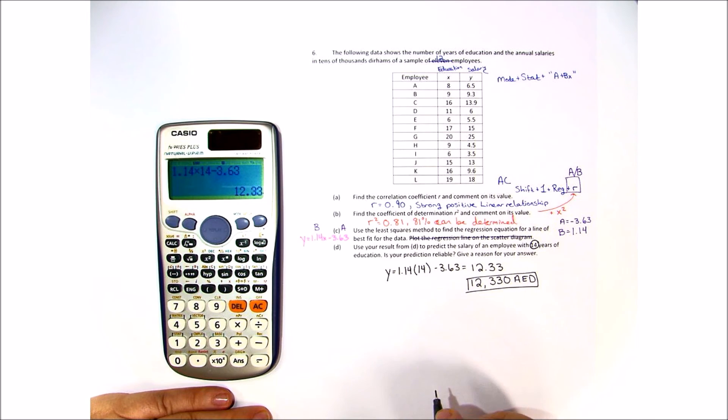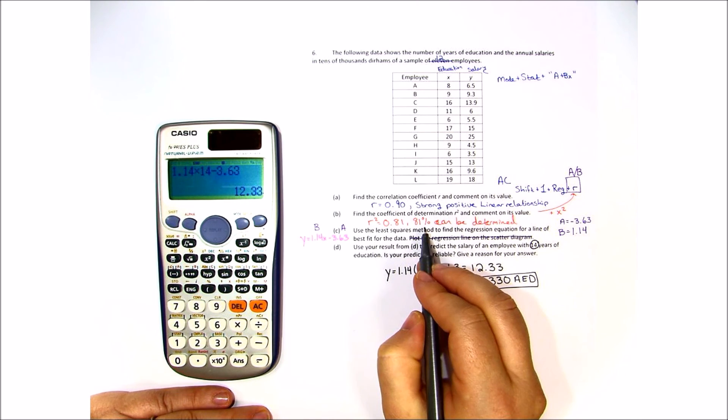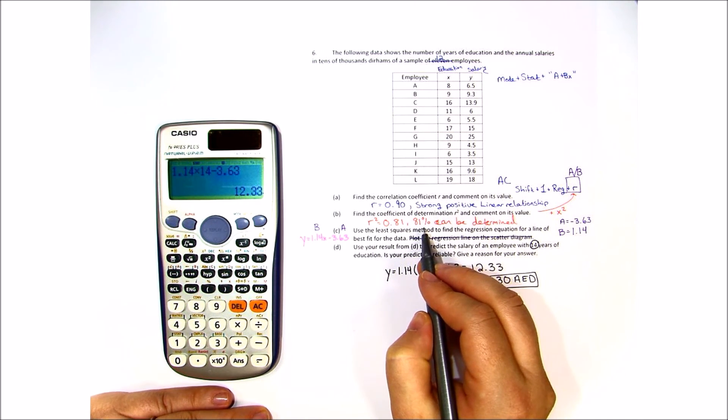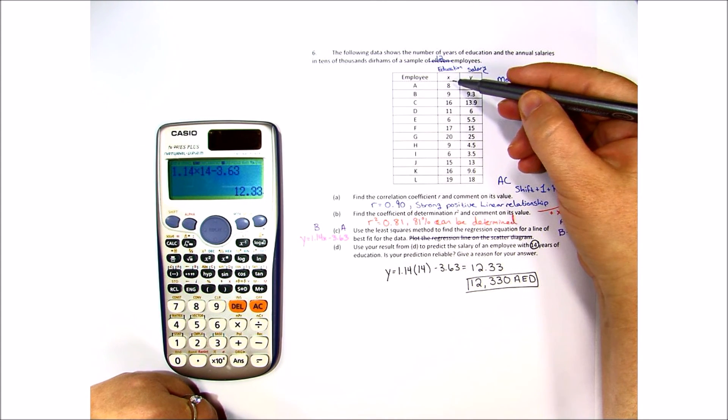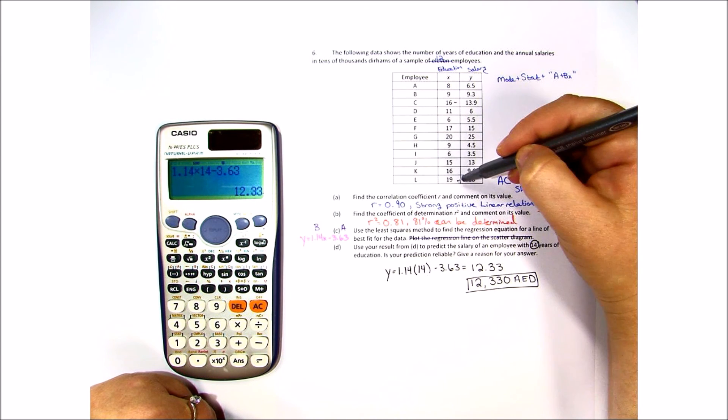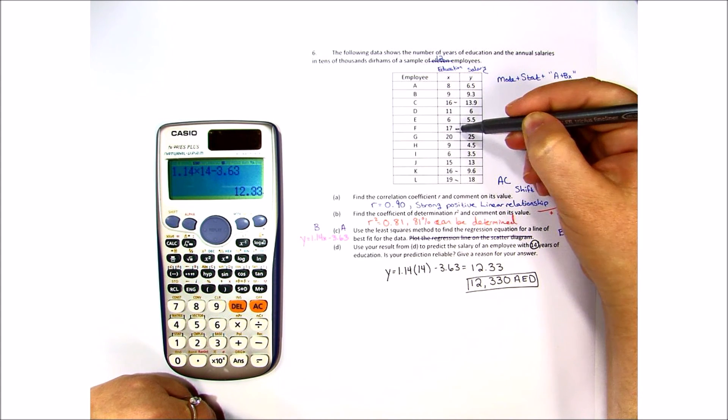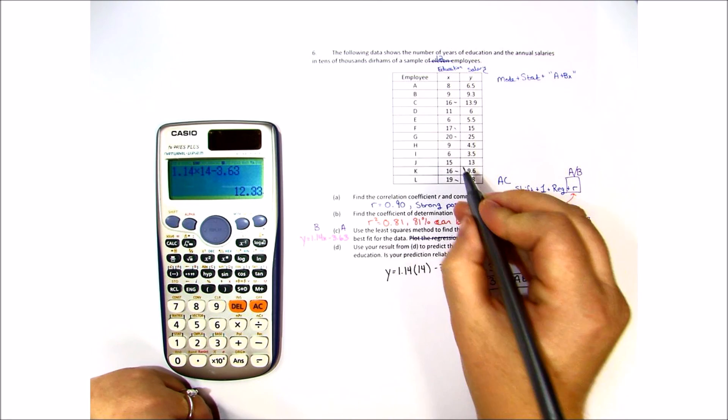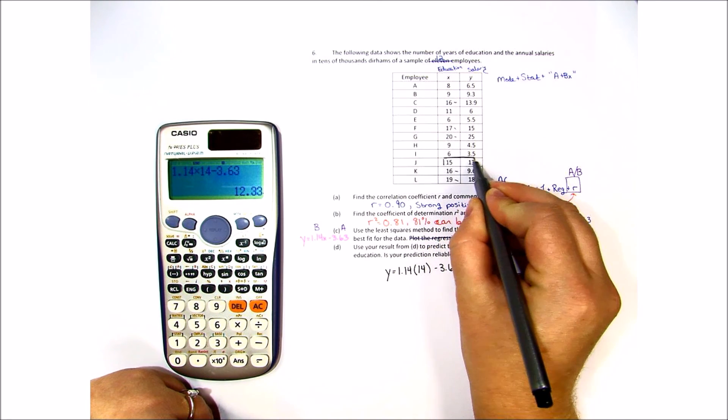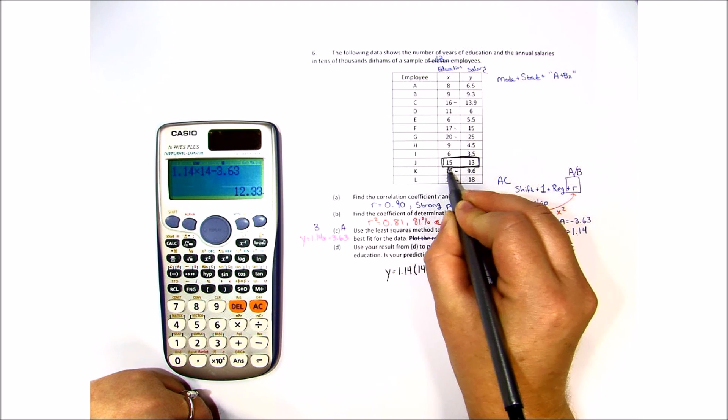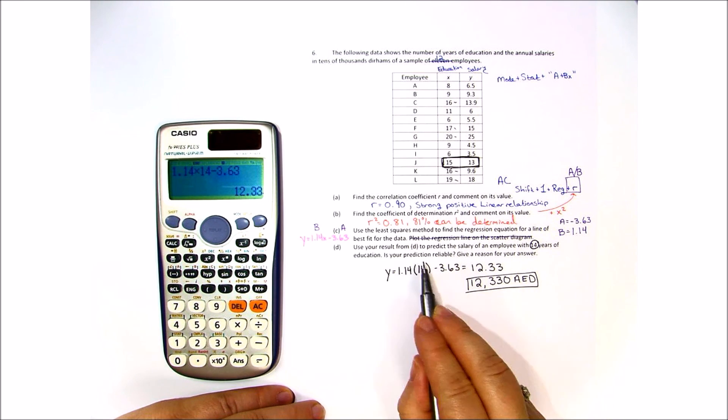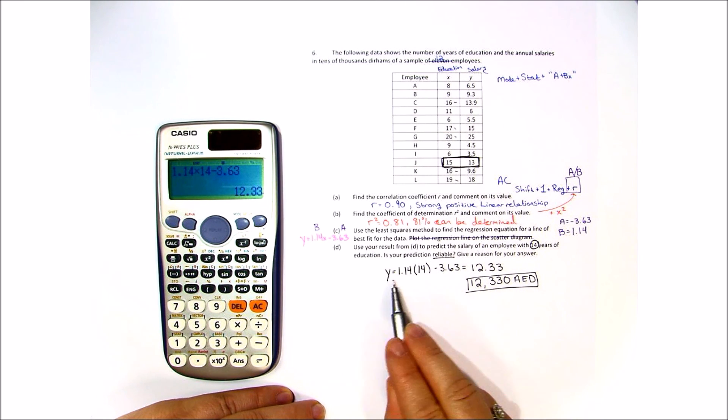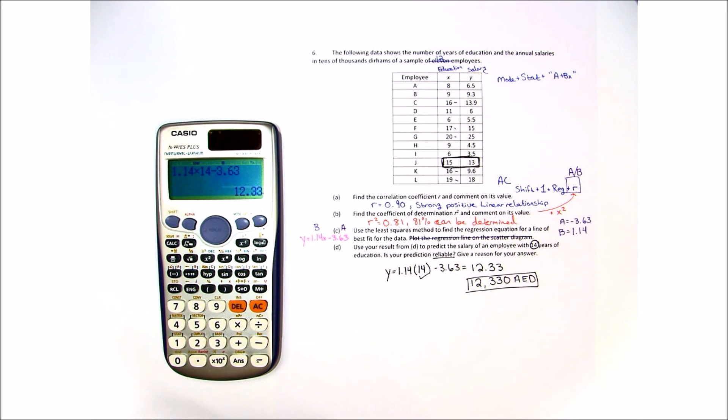And then it says, is it reliable? Well, r squared says 81% that it will be reliable. It's 81% can be determined. But even more importantly, if we go up here to our data, we have 16 is a nice high number, 19, 16, 17, 20. We're looking for a number close to 14 and right here we see that somebody with 15 years experience makes about 13,000. Therefore, it is reliable to say that at 14 years you should be making about 12,000.